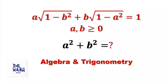Hello everyone, I'm Dr. Wang. Here is the question: If a times square root of (1 minus b squared) plus b times square root of (1 minus a squared) equals 1, and a and b are greater than or equal to 0, what is the value of a squared plus b squared?